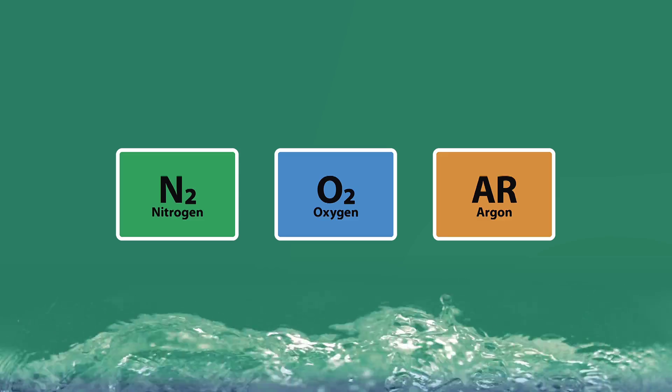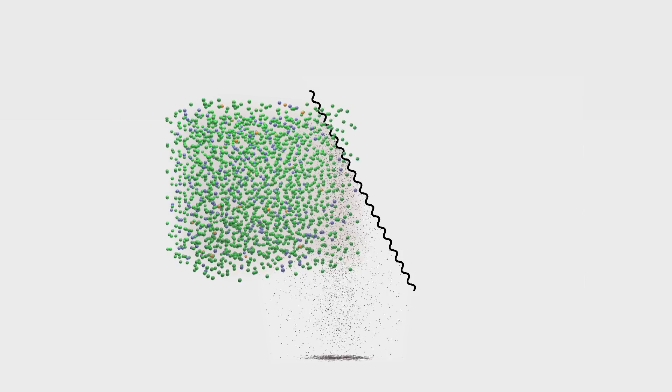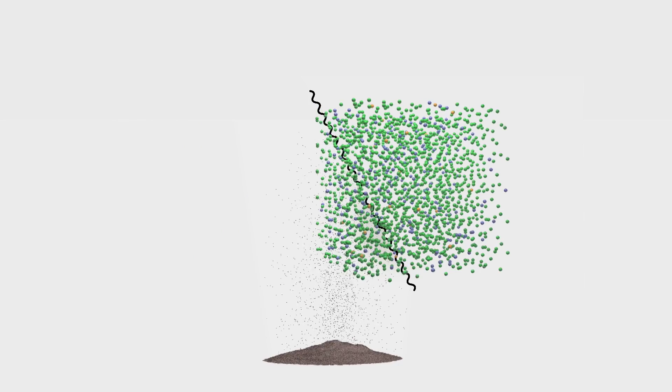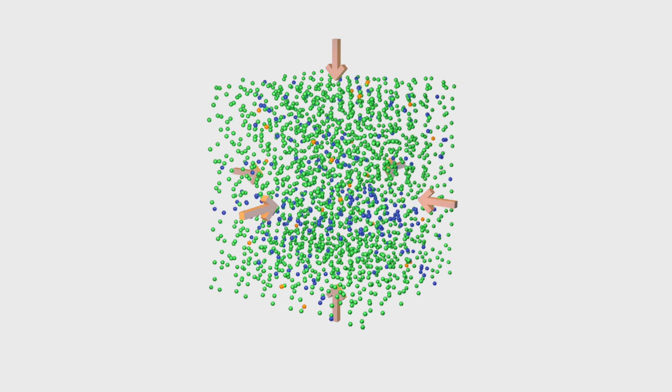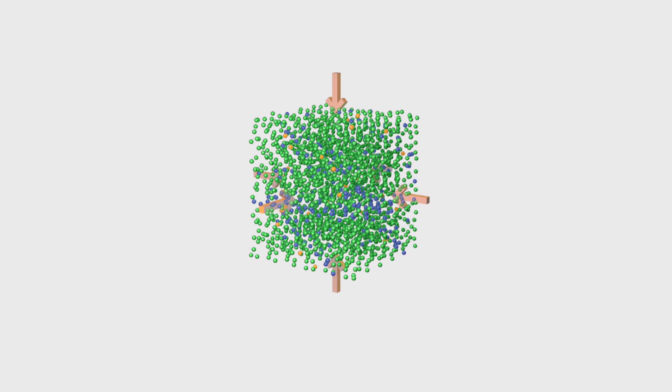There are several steps in the process. First, the air undergoes filtration to remove any dust or pollen. It is then compressed. The compressed air is fed into a purification unit, where moisture, carbon dioxide, and hydrocarbons are removed.